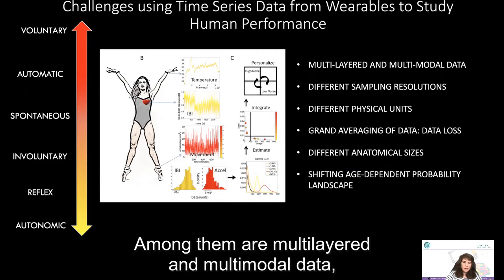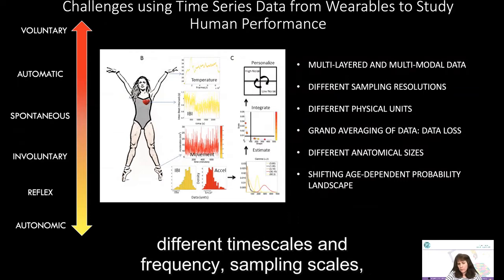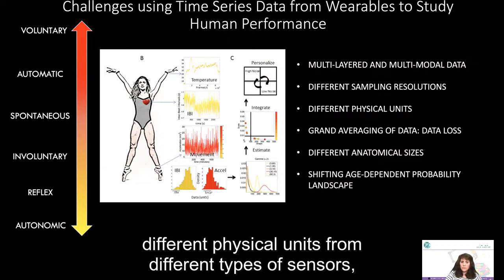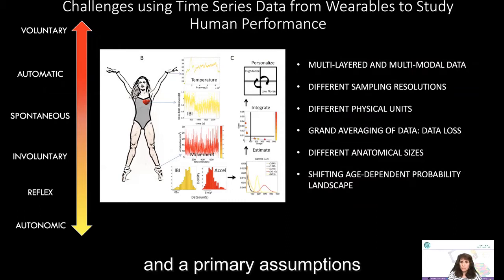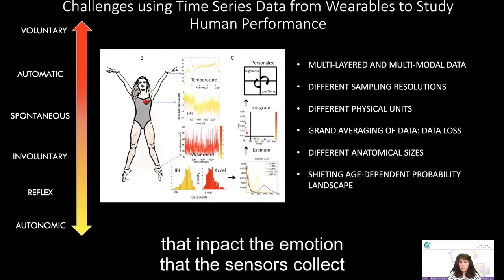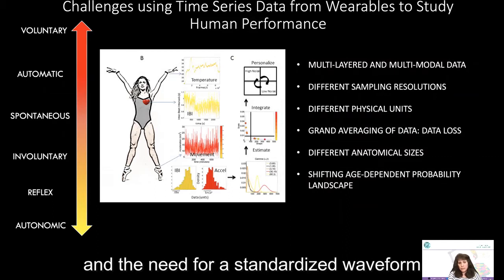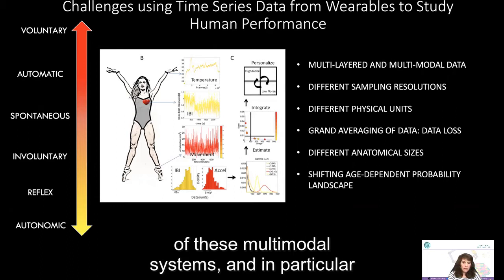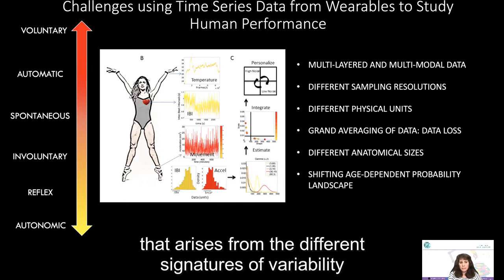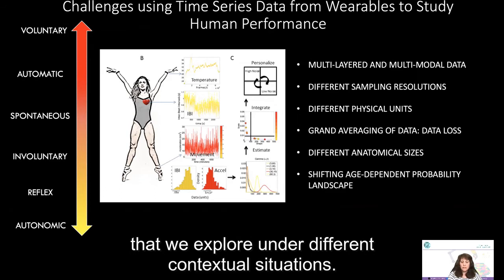Among the challenges are multi-layered and multi-modal data, different sampling resolutions, different time scales and frequency sampling scales, different physical units from different sensor types, data loss owing to grand averaging techniques under a priori assumptions of certain probability distributions, the presence of different anatomical sizes that impact the motion sensors collect, the need for a standardized waveform that can be integrated across different layers of these multimodal systems, and in particular the shift in age-dependent probability landscape that arises from the different signatures of variability we explore under different contextual situations.